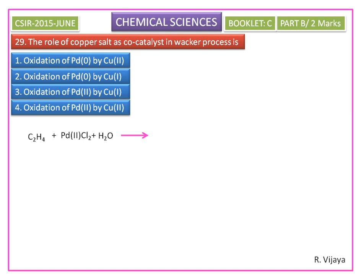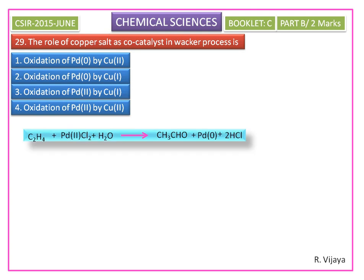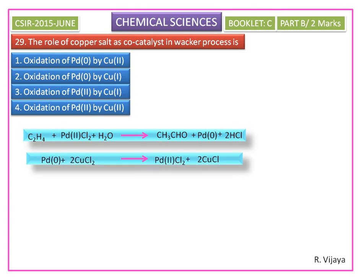Ethylene oxidized by palladium(II) chloride gives acetaldehyde. Here, palladium(II) is reduced to palladium(0). This palladium(0) will then be oxidized by cupric chloride (CuCl₂), giving back palladium chloride.